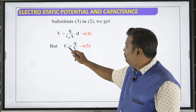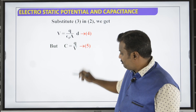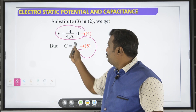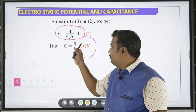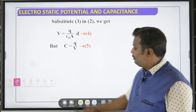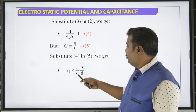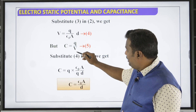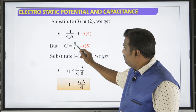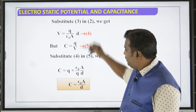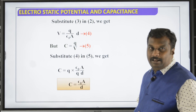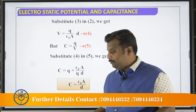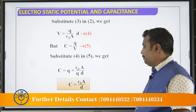Since C equals Q by V, substituting the expression for V: the Q terms cancel out, giving C equals ε₀·A divided by d. This is the capacitance of a parallel plate capacitor.